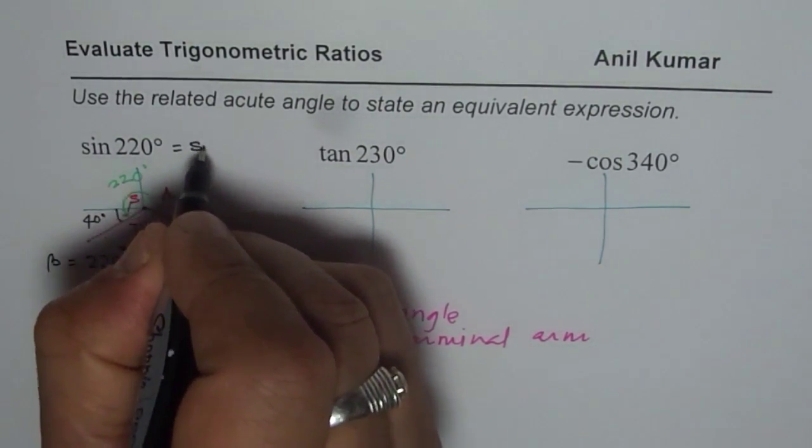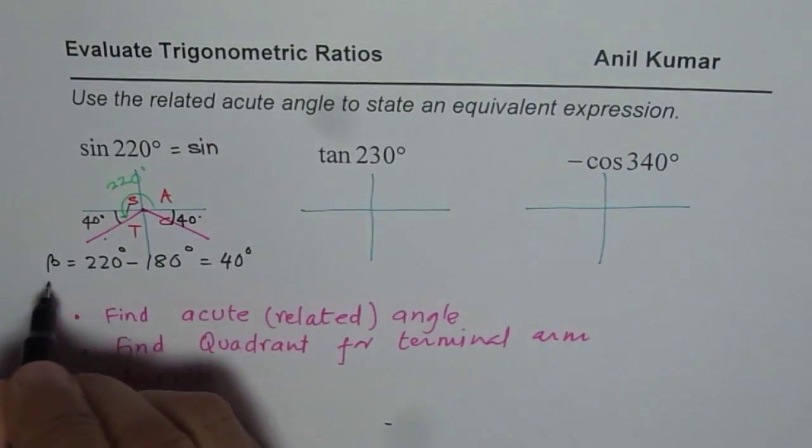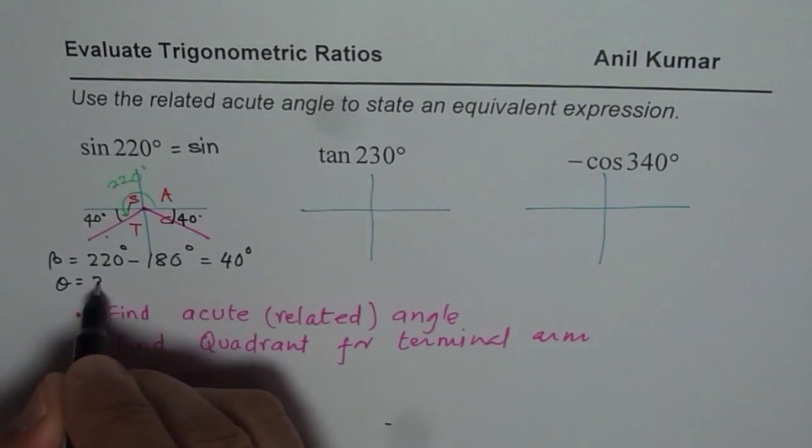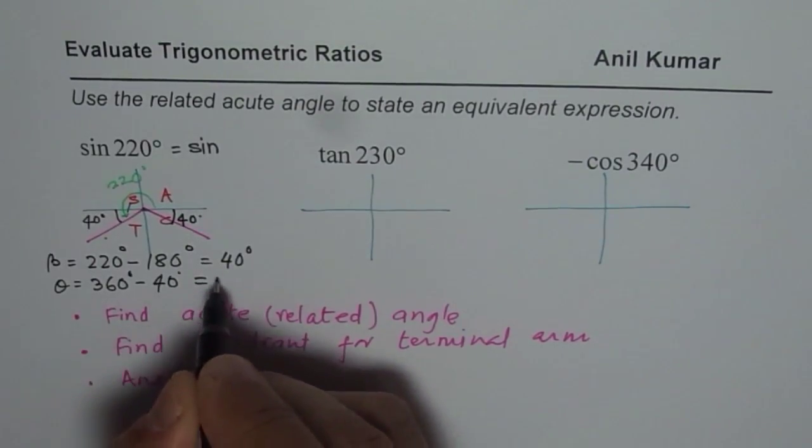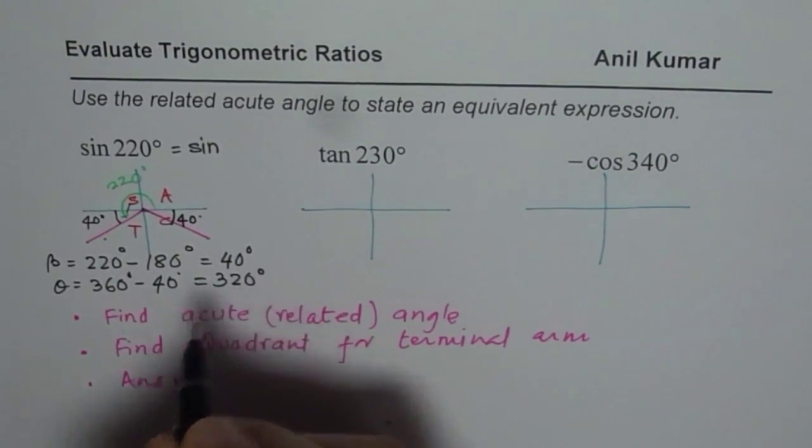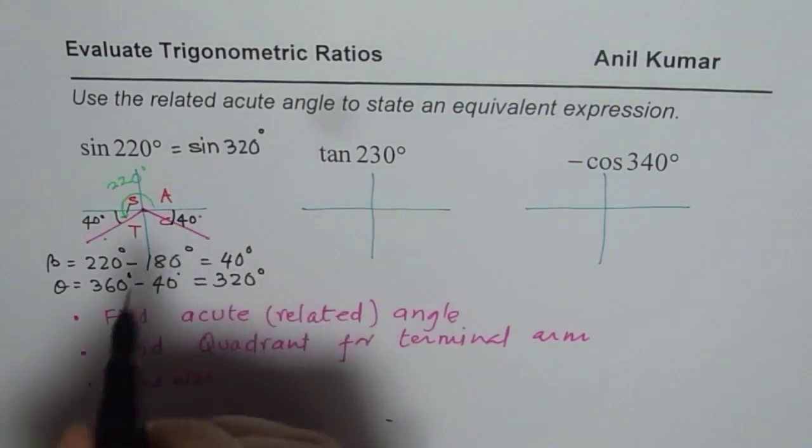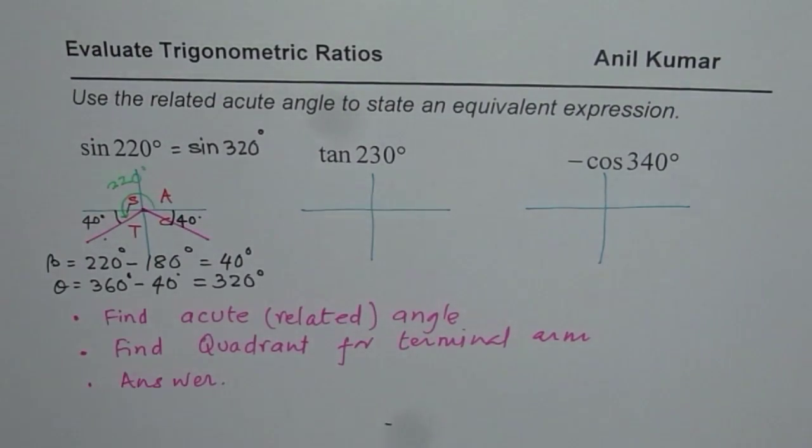So we could write this as sine of theta equals 360 degrees minus 40 degrees, which is 320 degrees. So we have sine of 320 degrees. That is how we will get our equivalent expression for the given expression.